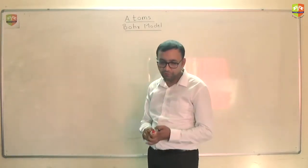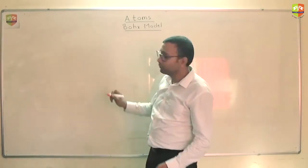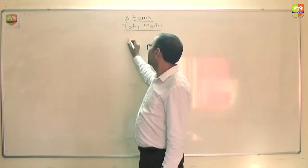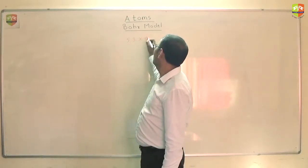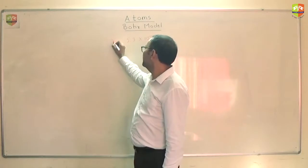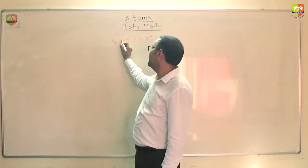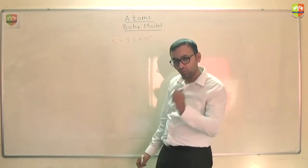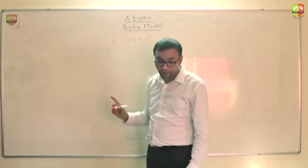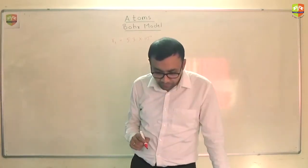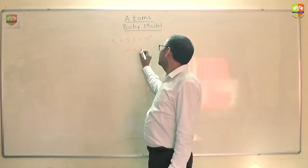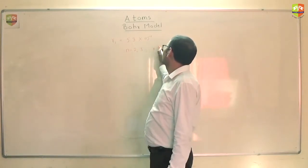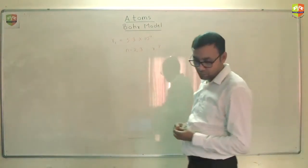Radius of the innermost electron orbit in hydrogen atom is 5.3 into 10 raise to power minus 11. This is the radius of the innermost orbit. What is the innermost orbit? n equal to 1. You need to find radius of n equal to 2 and n equal to 3.